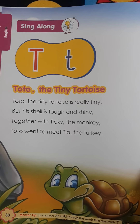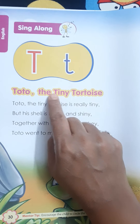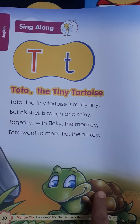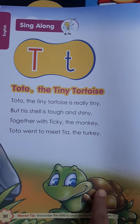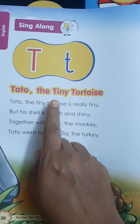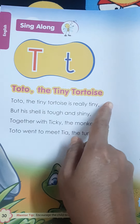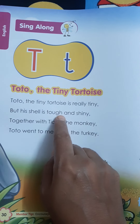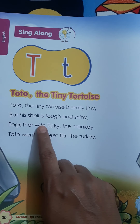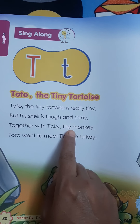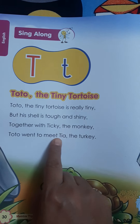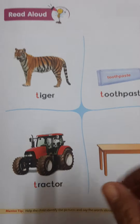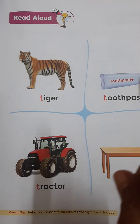Here one rhyme is given related to the T letter. So let's see which rhyme is given here. Toto the Tiny Tortoise. The name of the tortoise is Toto. Toto the Tiny Tortoise is really tiny, but his shell is tough and shiny. Together with Tiki the monkey, Toto went to meet Tia the turkey.